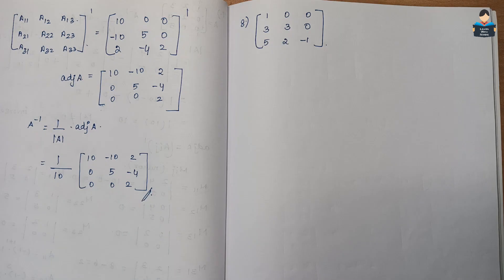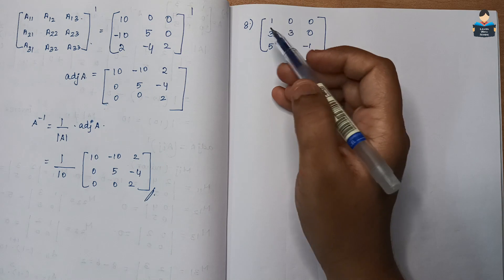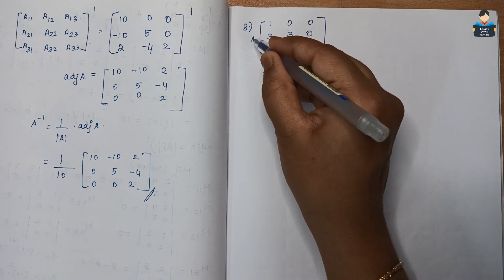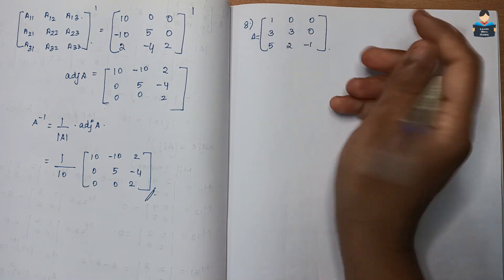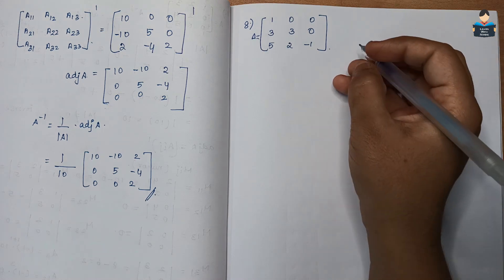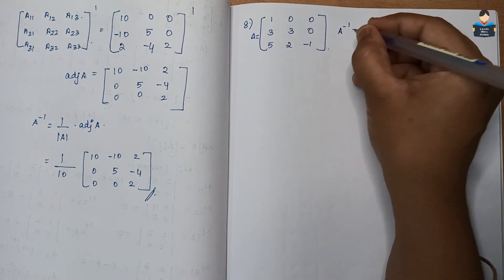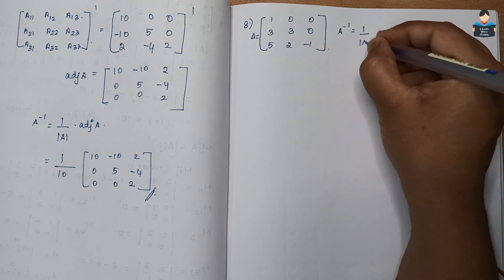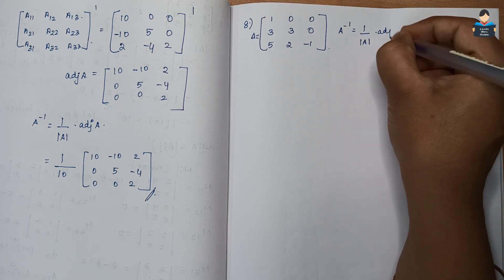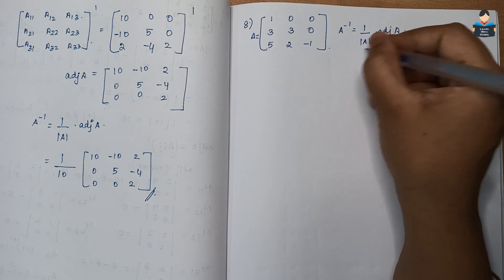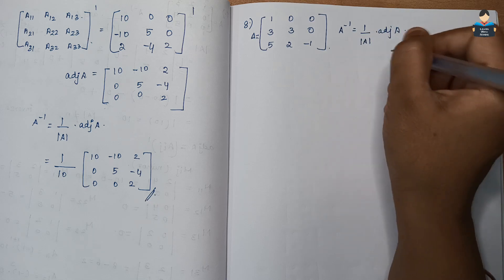Hello everyone, welcome to our channel. In this video we cover Class 12 NCERT Maths Chapter 4 Determinants, Exercise 4.4, Question number 8. We will find A inverse, which is equal to 1 by determinant of A into adjoint of A. First, we find the determinant of A.